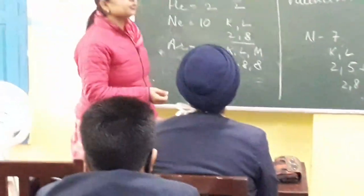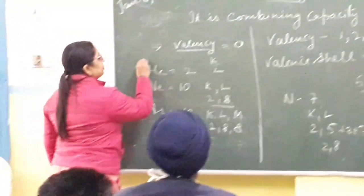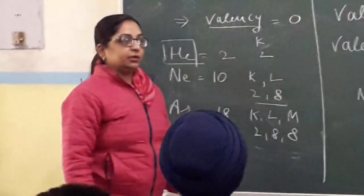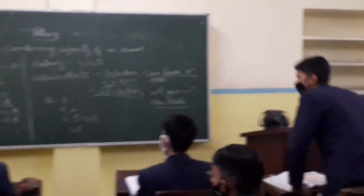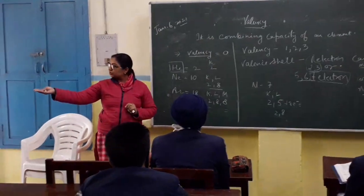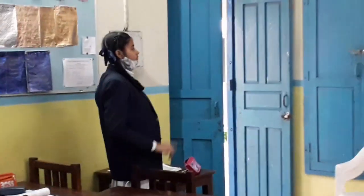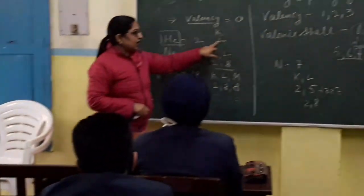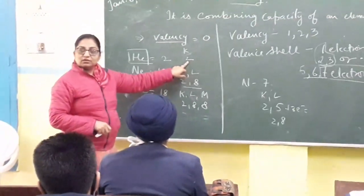Now let us discuss with the help of examples. The first example we are taking is helium. What is the atomic number of helium? Two. The atomic number of helium is two. What is the configuration of helium? Two. How many shells would it have? One K shell only. It will have only one shell, and these two electrons are there.